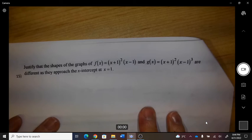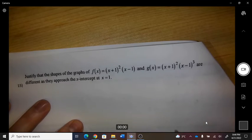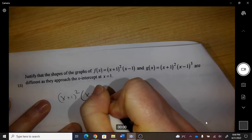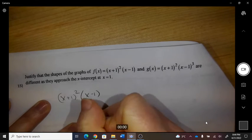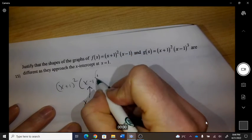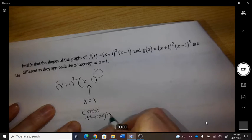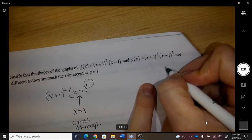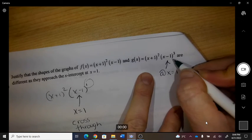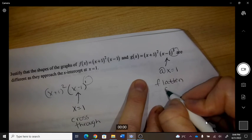Justify that the shapes are different as x approaches 1. So at that point, because the exponent is 1, it's going to cross through. And when we look at this one at x equals 1, because that's 3, it's going to flatten and cross.